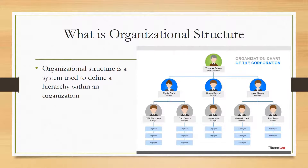If we look at this diagram here, Thomas Edison is the CEO of the organization. He has three managers within his span of control, and each manager has their own span of control. Each manager has two employees reporting to them, and they have to supervise their own teams. So the organization's structure gives a clear-cut idea of how the organization will work.